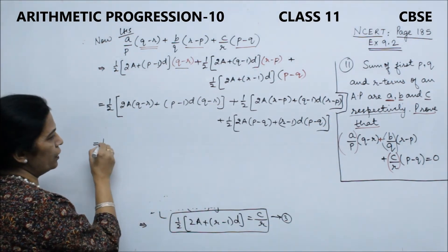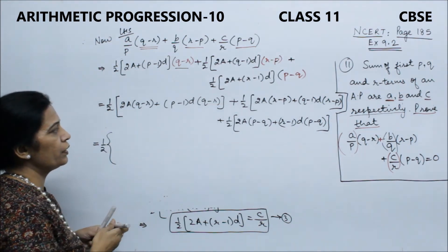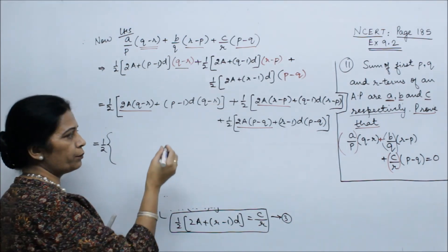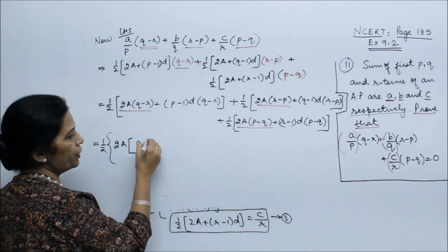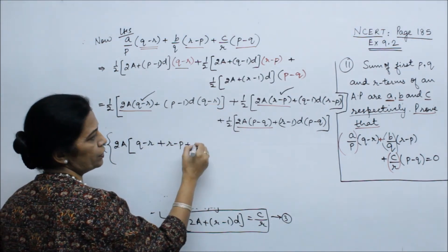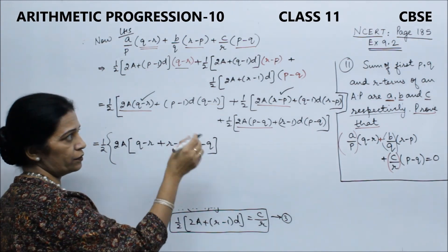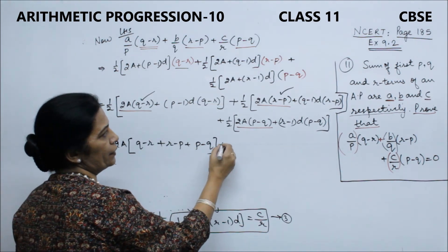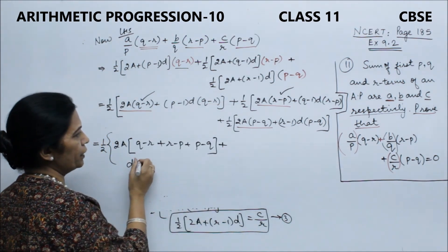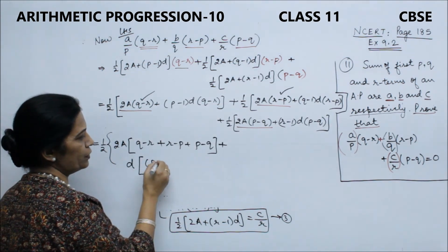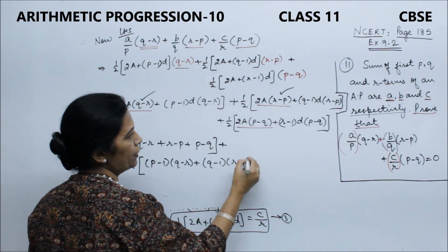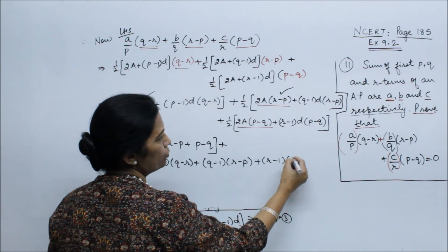Taking half as common outside. In the underlined terms, 2A is common: 2A × [(Q−R) + (R−P) + (P−Q)]. For the remaining terms, D is common: D × [(P−1)·(Q−R) + (Q−1)·(R−P) + (R−1)·(P−Q)].